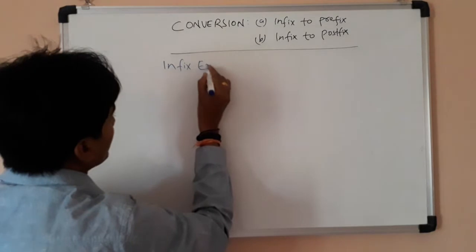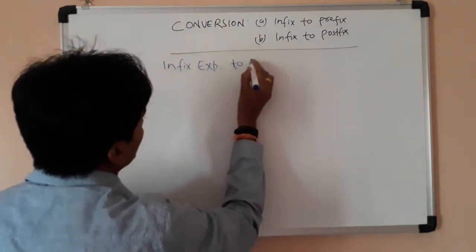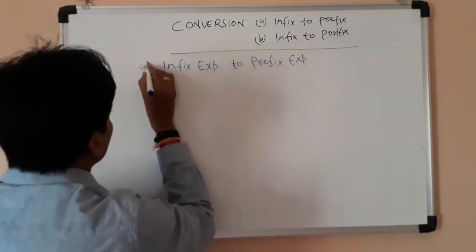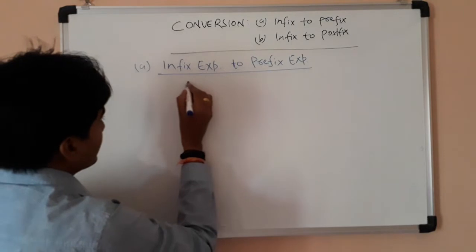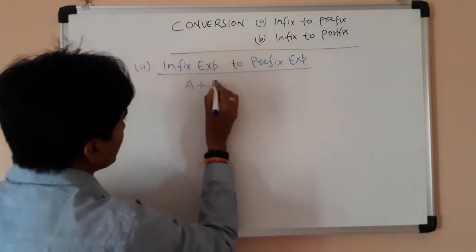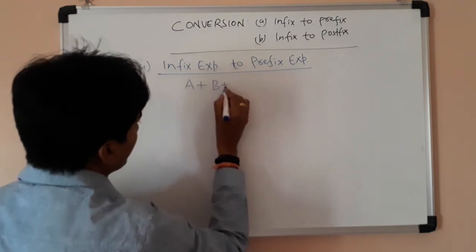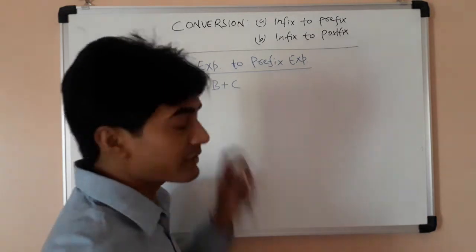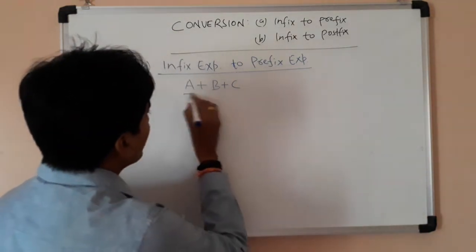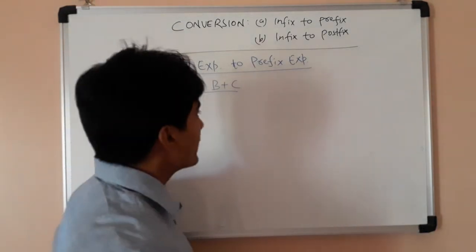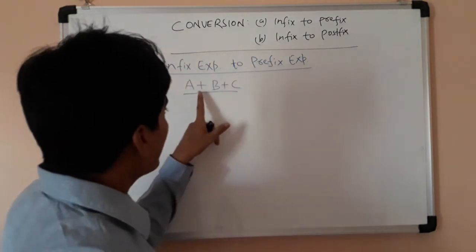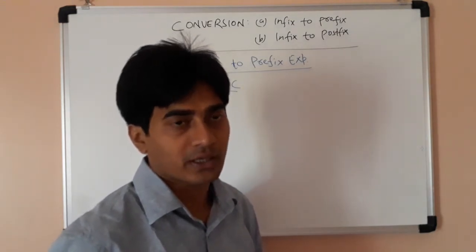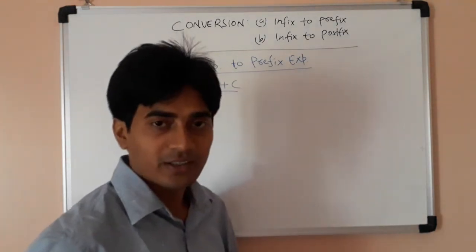Let's look at infix expression to prefix expression. Suppose we have a plus b plus c. The operator is in between the operands, so this is an infix expression. We have to convert this into prefix expression. According to the rule, if two or multiple operators appear, we check the priority or precedence of the operator. But here both are of the same priority — addition operators are of same priority.